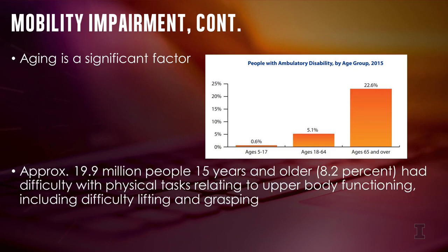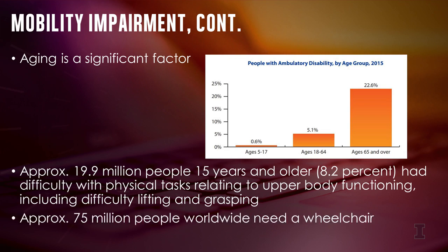Approximately 20 million people 15 years and older, roughly 8.2%, had difficulty with physical tasks related to upper body functioning, including difficulty lifting and grasping. And globally, according to World Health Organization estimates, approximately 75 million people need a wheelchair.